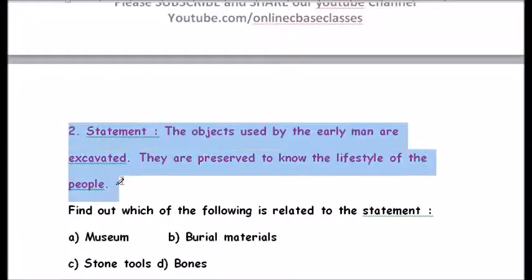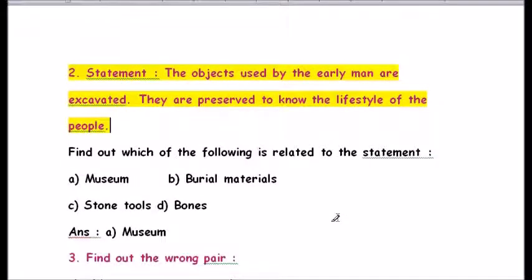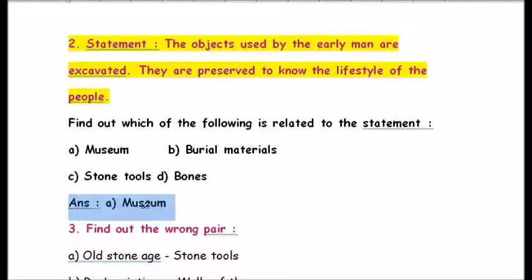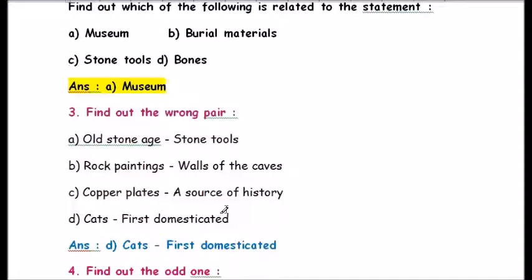Question number two: the objects used by the early man are excavated and preserved to know the lifestyle of the people. Find out which of the following is related to the statement. Options are: a) museum, b) burial materials, c) stone tools, d) bones. The answer is a) museum — they are preserved in museums.